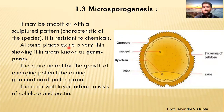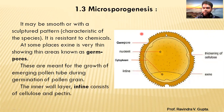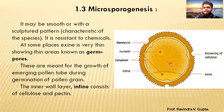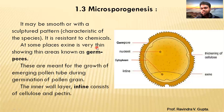At some places, the exine is very thin, showing areas known as germ pores. If we look at the exine wall, most of its wall is thick, but at certain points — you can see these parts in the diagram — the exine wall becomes thin instead of thick. So at those places, exine is very thin, showing areas known as germ pores; small pores are present there.